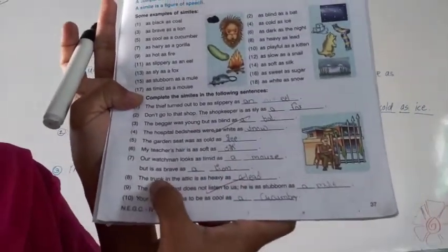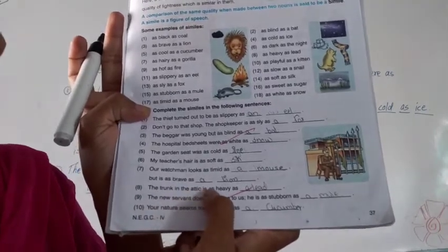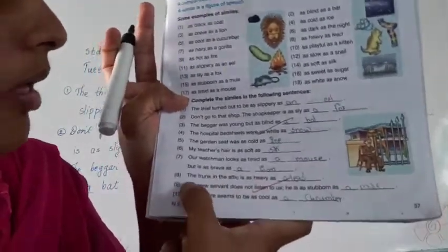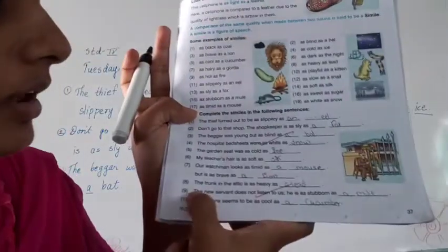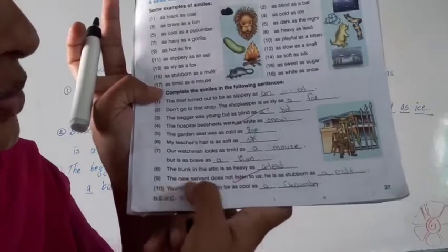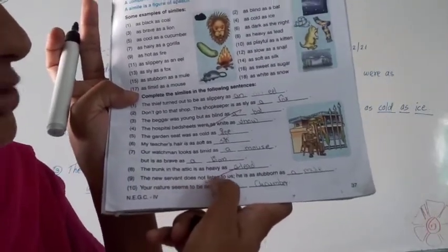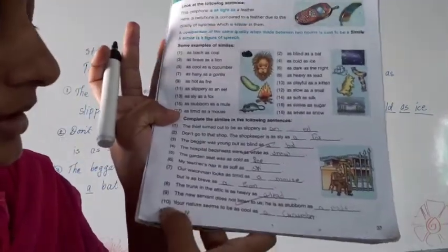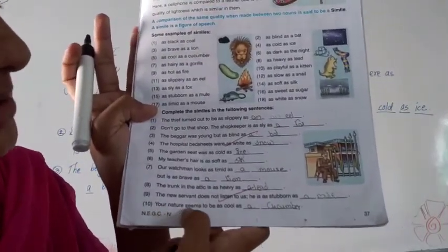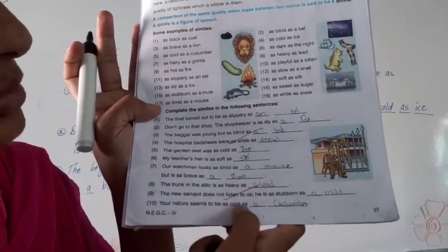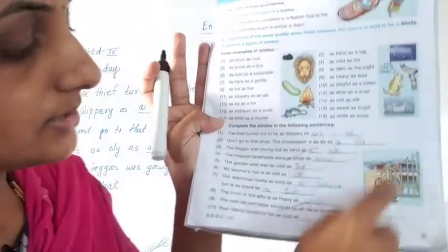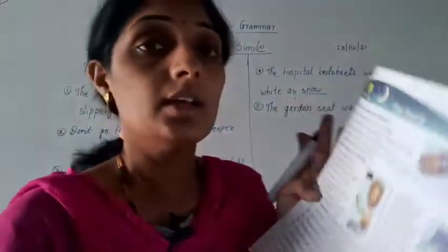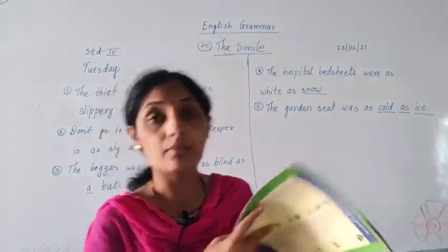Eighth one: the trunk in the attic is as heavy as a lid. Ninth one: the new servant does not listen to us; he is as stubborn as a mule. Tenth one: your nature seems to be as cool as a cucumber.